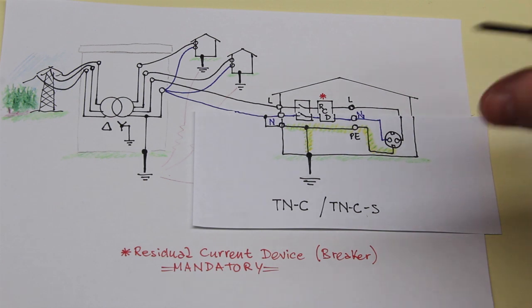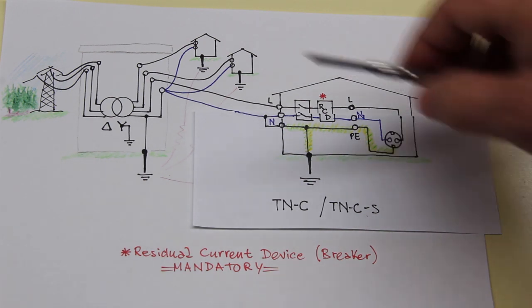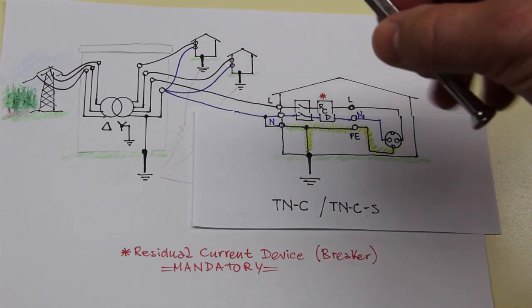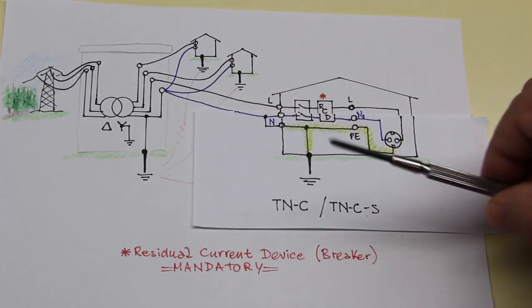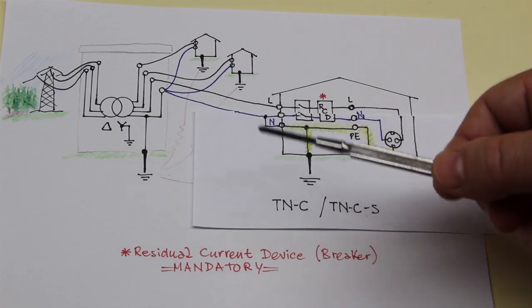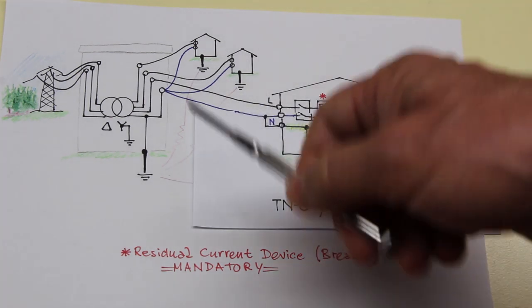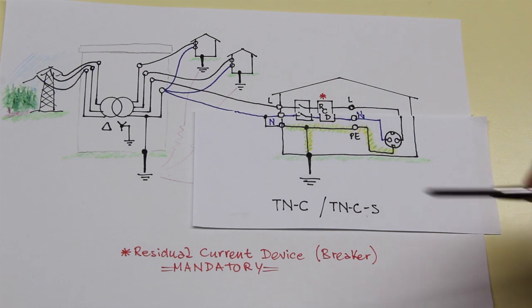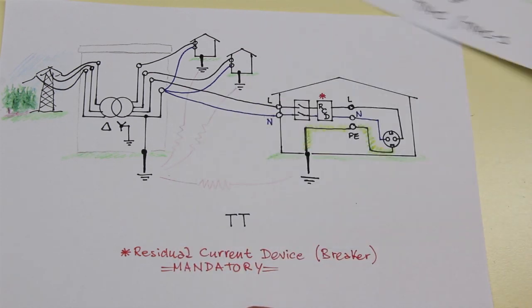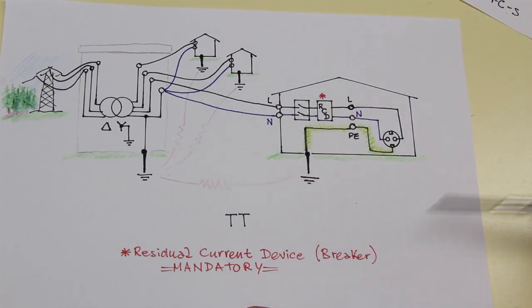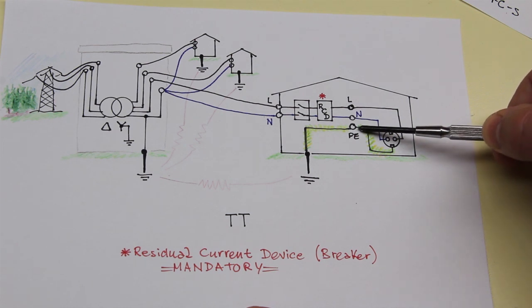What I'm discussing today here is specific to Europe or these earthing systems in North America, and not all North America, because for example there is the single wire system that has a different behavior. So what I'm going to discuss later is not applicable in those cases. That is important. So what is important to remember is the neutral in Europe and where there is a TT system, the neutral is never at the same potential of PE.